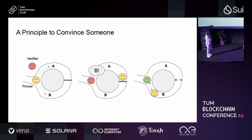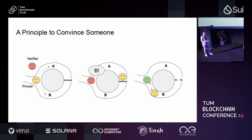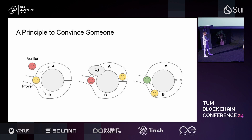Here we have the verifier in red and the prover in yellow. The statement being proven is: 'I know a key that opens the back door in this cave.' We also want to not reveal this key to the verifier. The prover proves he knows a key that opens the back door, and the verifier learns nothing beyond this statement. The prover enters the cave and randomly selects either path A or path B, then the verifier calls out a path via random selection.